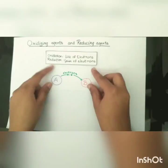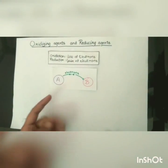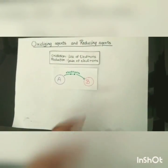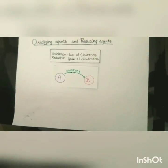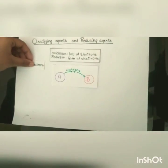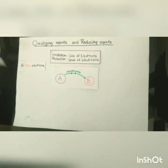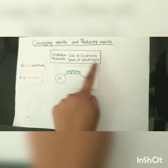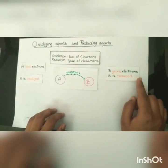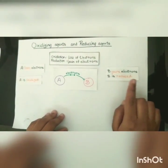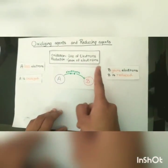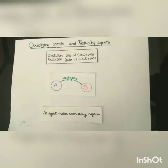You can understand it better through this diagram. Here, A is giving its electrons to B, and B is receiving electrons. A loses electrons, therefore A is oxidized — oxidation is the loss of electrons. B gains electrons, therefore B is reduced — reduction is the gain of electrons.